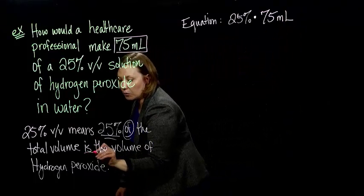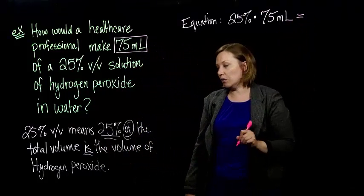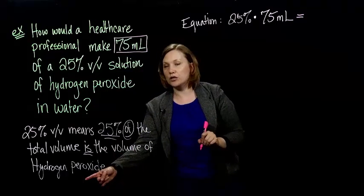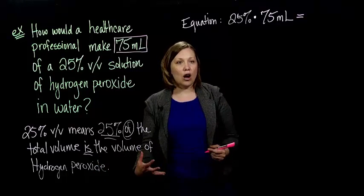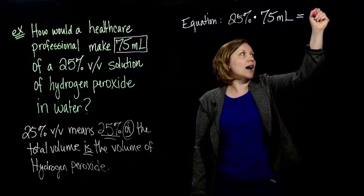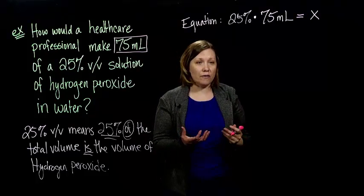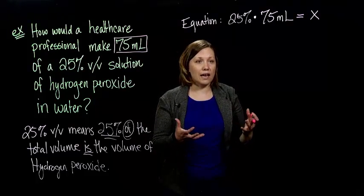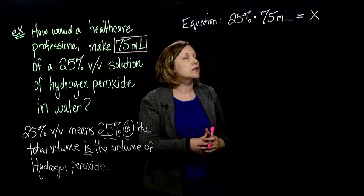And then another key word, 'is,' tells us to make an equal, and the volume of hydrogen peroxide. Do we know the volume of hydrogen peroxide? No, that's what we're trying to figure out. So I'm going to call that X. Because if we can find the volume of hydrogen peroxide, we can then figure out how to mix up the solution. The rest is water.